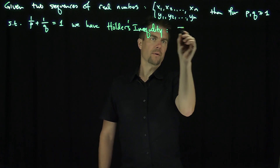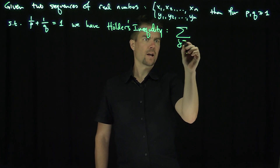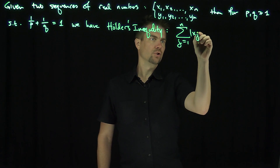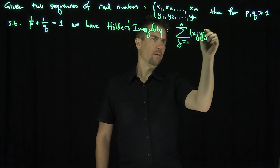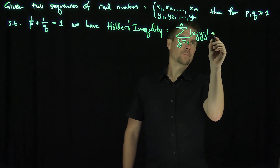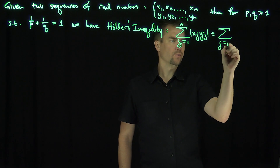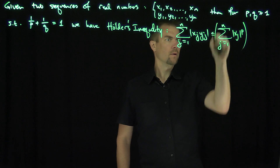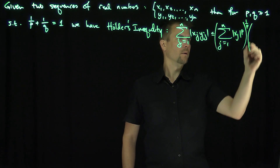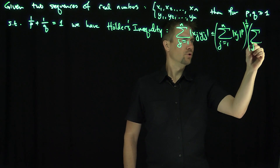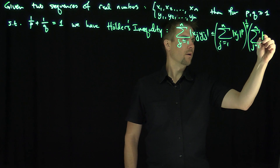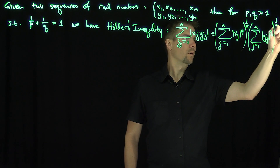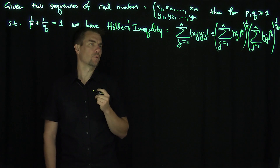Hölder's inequality states that the sum j from 1 to n of the absolute value of xⱼyⱼ is no more than the sum j from 1 to n of |xⱼ|^p to the 1/p power, times the sum j from 1 to n of |yⱼ|^q to the 1/q power. That's the Hölder inequality.